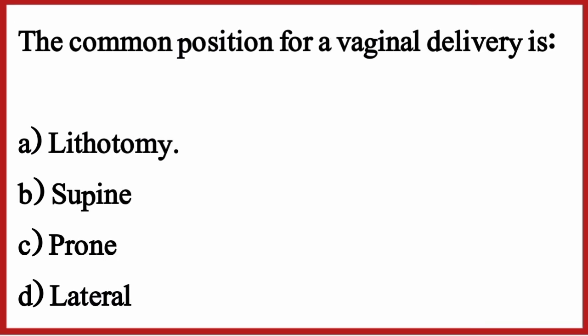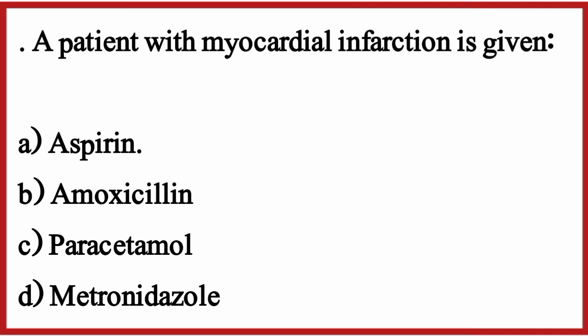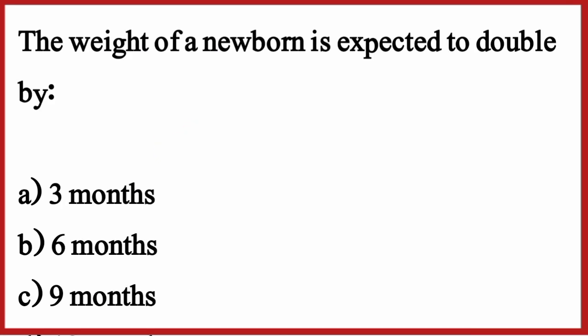The common position for a vaginal delivery is — the correct option is option A: Lithotomy. A patient with myocardial infarction is given — the correct option is option A. The weight of a newborn is expected to double by — the correct option is option B: 6 months.